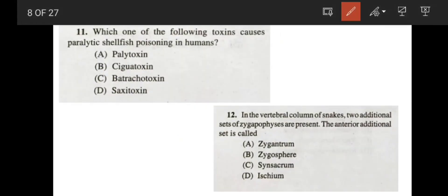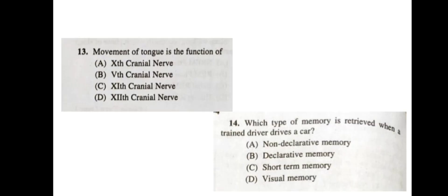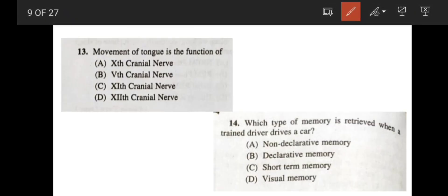Coming to the next question. Question number 11. Which one of the following toxins causes paralytic shellfish poisoning in humans? Paralytic shellfish poisoning is caused by saxitoxin, option D. Now, coming to the 12th question. In the vertebral column of snakes, two additional sets of Zygapophysis are present. The anterior additional set is known as Zygosphene. Here the spelling is not correct. It will be Zygosphene, not Zygospheni. Now, coming to the question number 13. Movement of tongue is the function of which cranial nerve? It is the function of hypoglossal nerve, which is the 12th cranial nerve.